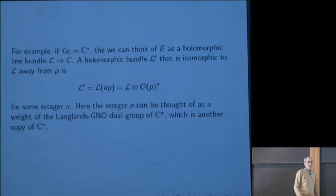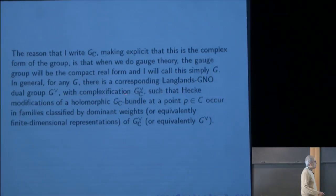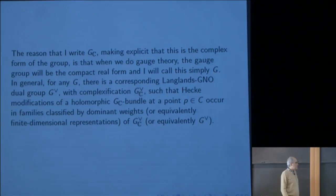In general, for any semi-simple group G, there is a corresponding Langlands-GNO dual group G-dual, with complexification G-dual-sub-C, such that Hecke modifications of a holomorphic bundle at a point P in C occur in families classified by dominant weights, or equivalently by finite-dimensional representations of the dual group. It doesn't matter if we talk about the compact or the complex form of the dual group, since their finite-dimensional representations are the same.